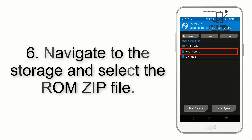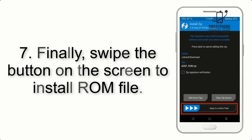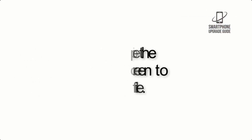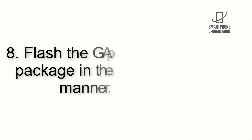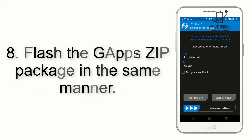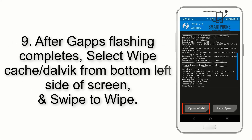Step 5: Go back to the recovery main screen and tap on the Install button. Step 6: Navigate to the storage and select the ROM zip file. Step 7: Finally, swipe the button on the screen to install the ROM file.